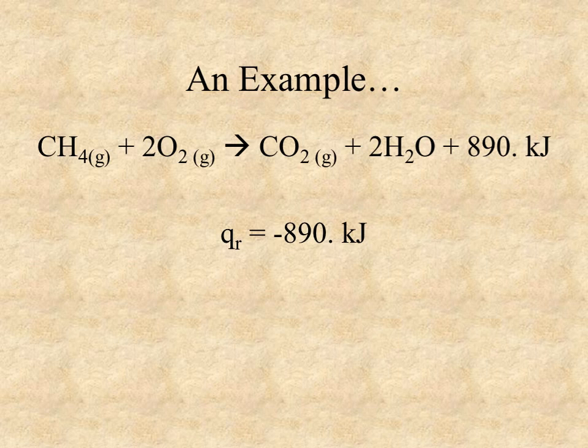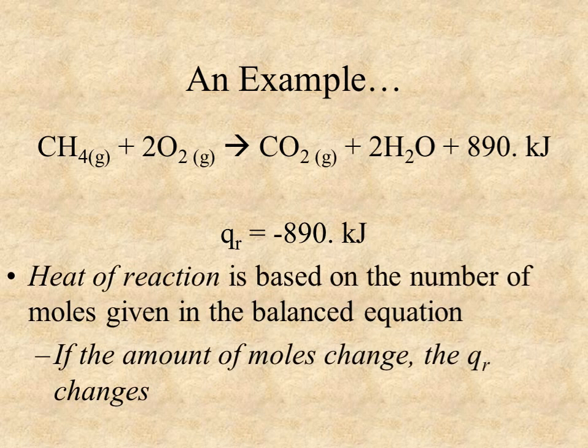And so we can see that for every one mole of methane that is burned, we get an output of 890 kilojoules of energy. So the heat of reaction would be identified as negative 890 kilojoules. And again, the sign simply represents the direction of the energy. Is it being subtracted from the system? Is it leaving the system as it does in an exothermic reaction? Or does it need to be added to the reaction as it would in an endothermic reaction?